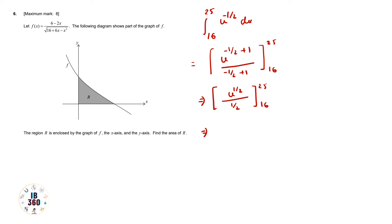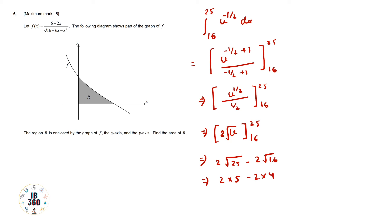This simplifies to 2√u evaluated from 16 to 25, giving 2√25 - 2√16 = 2(5) - 2(4) = 10 - 8 = 2. The area is 2 square units — the unit is important, even though no specific unit is given here.